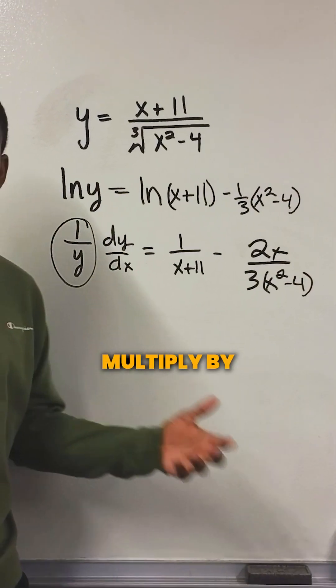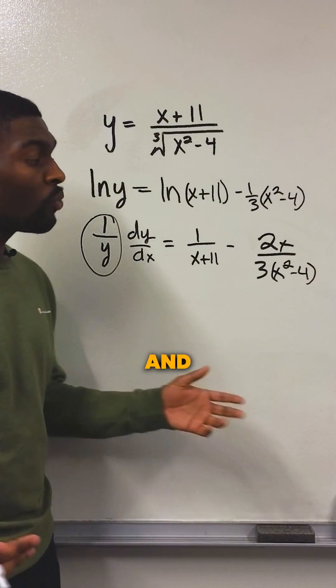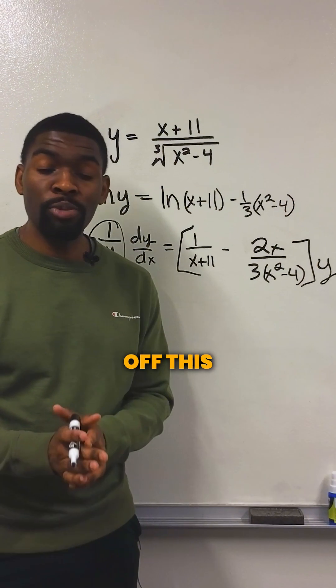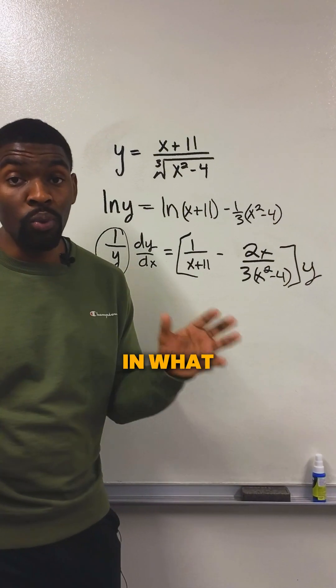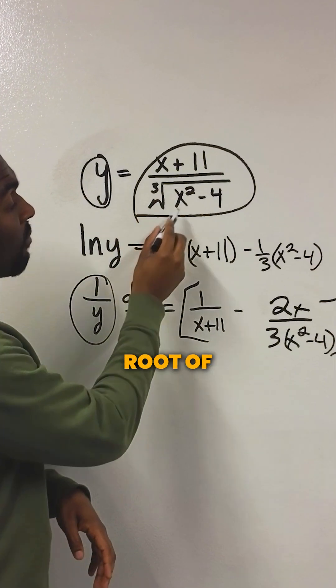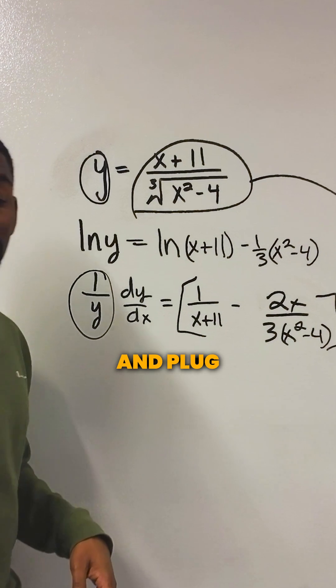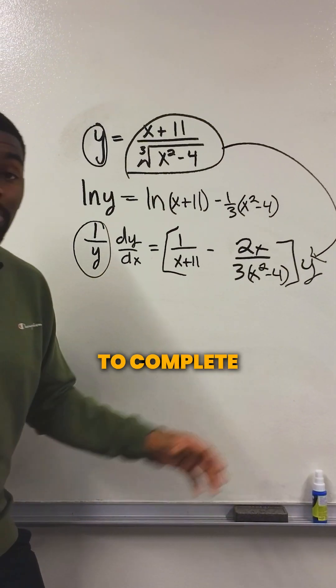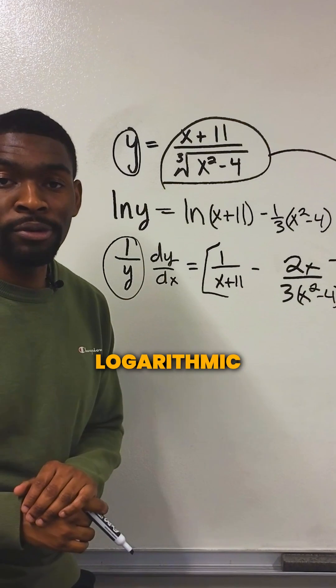but we need to multiply by Y on both sides. And when we do that, to finish off this problem, we're going to need to substitute in what Y actually is. We're going to take X plus 11 over the cube root of X squared minus 4 and plug that in to our Y to complete this problem. That's how we use logarithmic differentiation.